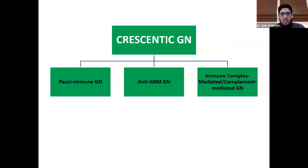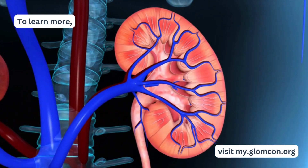In general, crescentic glomerulonephritis is a general category. Under this category come pauci-immune glomerulonephritis, anti-GBM glomerulonephritis, and immune-complex mediated or complement-mediated glomerulonephritis.